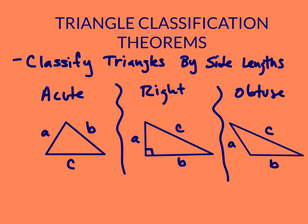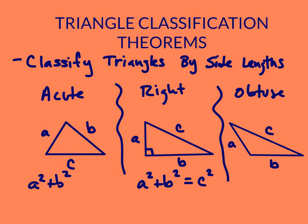I can classify a right triangle using the Pythagorean theorem. The Pythagorean theorem states that if I take the legs of my right triangle, A and B, and square them and add them together, A squared plus B squared equals C squared. When this relationship holds, I have a right triangle.